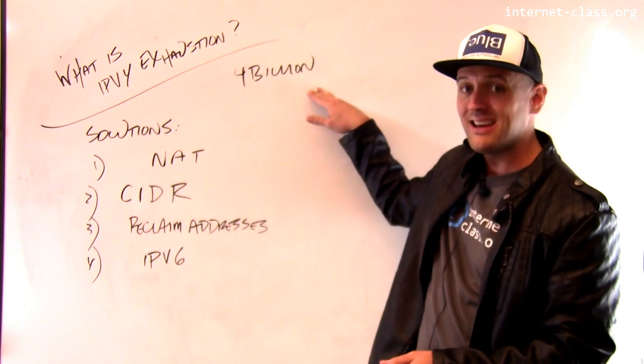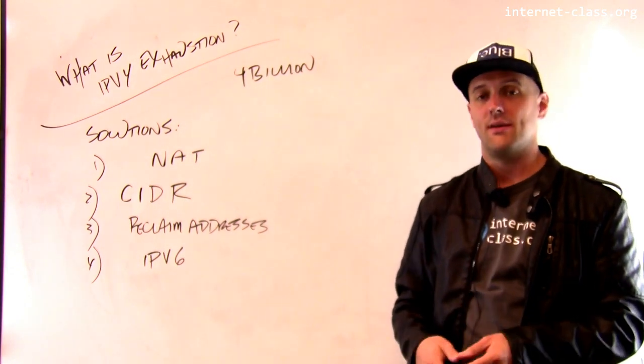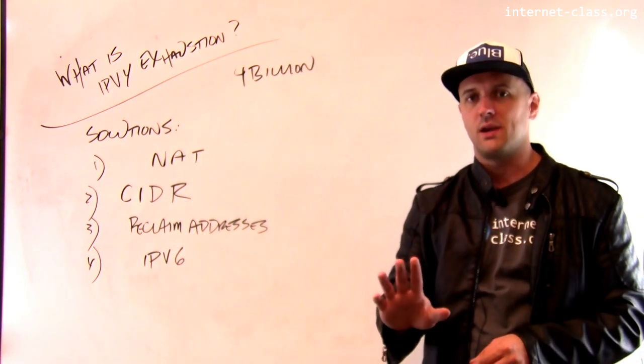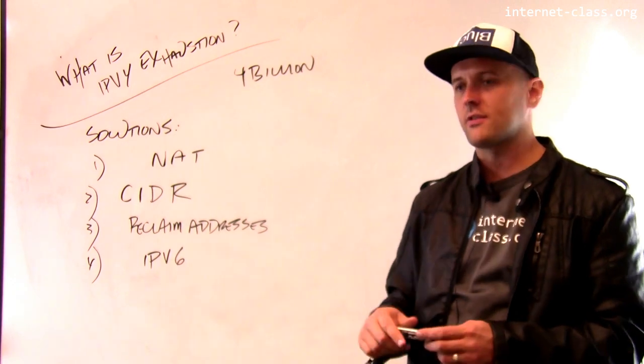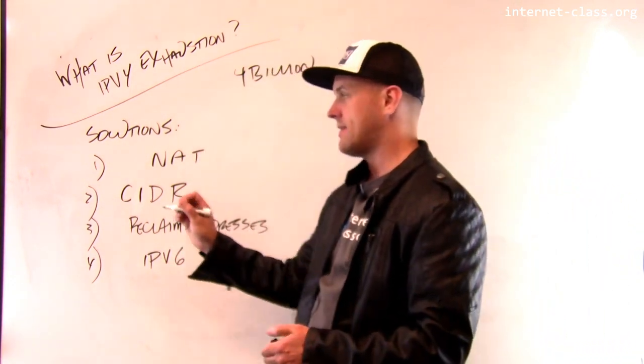But there's also this issue of how do we make more. Because fundamentally, 4 billion is smaller than the population of Earth. And eventually, everybody on Earth is going to have a computer that's connected to the internet, at least one. And so we need more IP addresses. What are some of the solutions that we've tried to this problem?